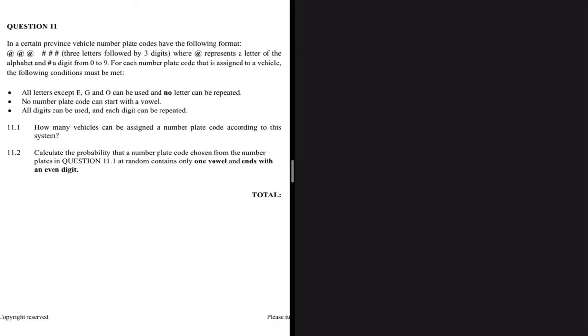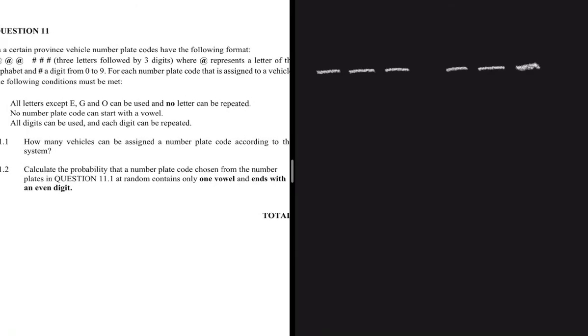Let me brief you on what's happening here. We are dealing with the counting principle applied to vehicle number plate codes, which have three letters followed by three digits. Let's go through the conditions we have.